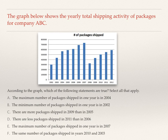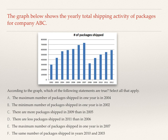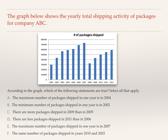Finally, let's look at a bar graph. The graph shows the yearly total shipping activity of packages for company ABC. Before reading the answer options, I look at the graph to make sense of it. Along the bottom, the company tracks shipping activity for years 2002 through 2012. The vertical axis goes up to about 800,000 packages, with a minimum of 100,000 and intervals of 100,000. The year 2007 stands out with the most packages shipped, while 2002 and 2008 show the fewest, with 2002 being slightly less.